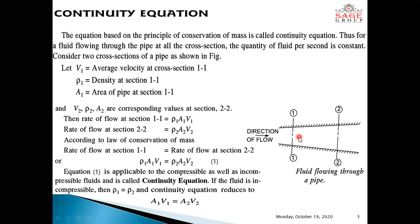If the fluid is incompressible, then rho 1 is equal to rho 2. And the continuity equation reduces to A1 V1 equal to A2 V2, which is also equal to the discharge or rate of flow.